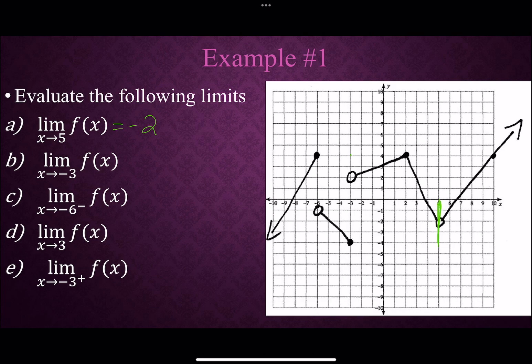Whereas at x equals negative 3 here, we can see the left side is approaching negative 4, whereas the right side is approaching positive 2. They are not converging together. They're not approaching the same number. So this would be DNE for does not exist. They have to be converging together for the limit to exist there.